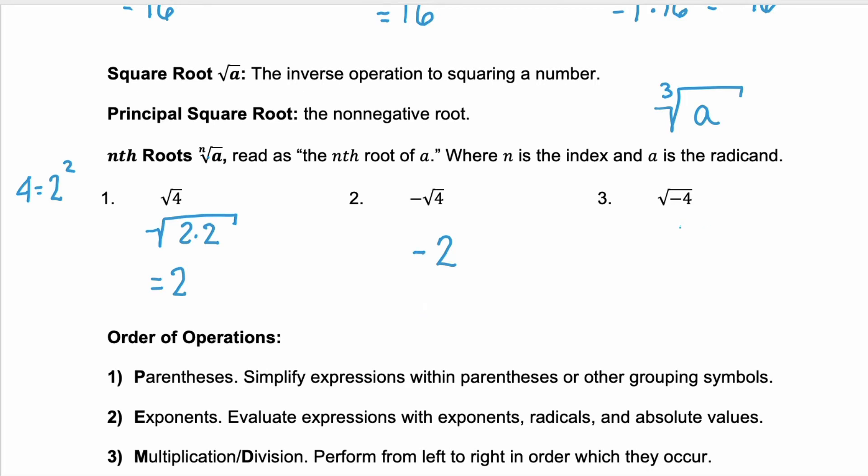Now, example 3, we have a negative inside. So our radicand is negative. Remember, the square root is saying what number squared got us this thing inside. So what number can you square and get a negative 4? Well, it's not a real number.